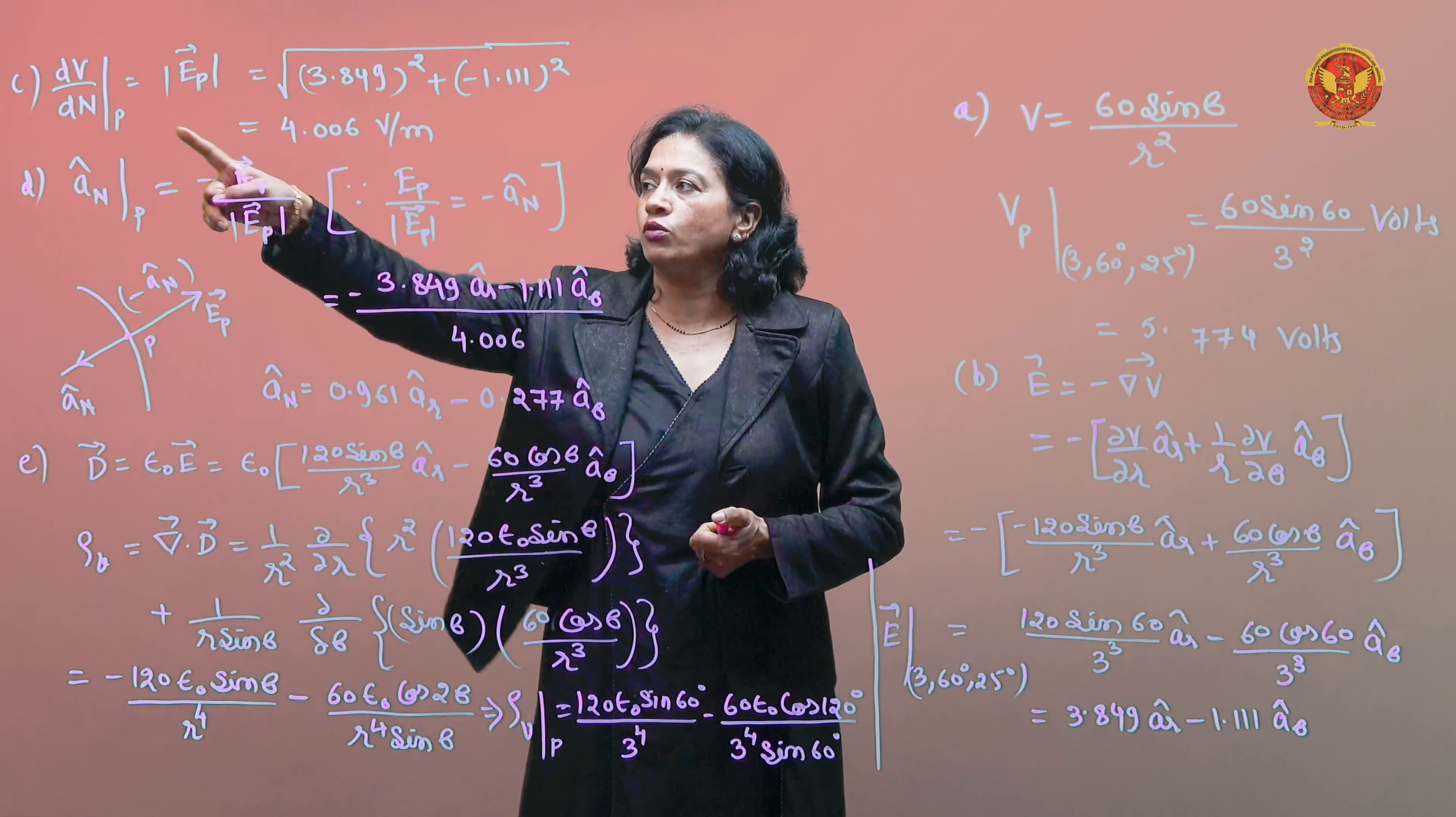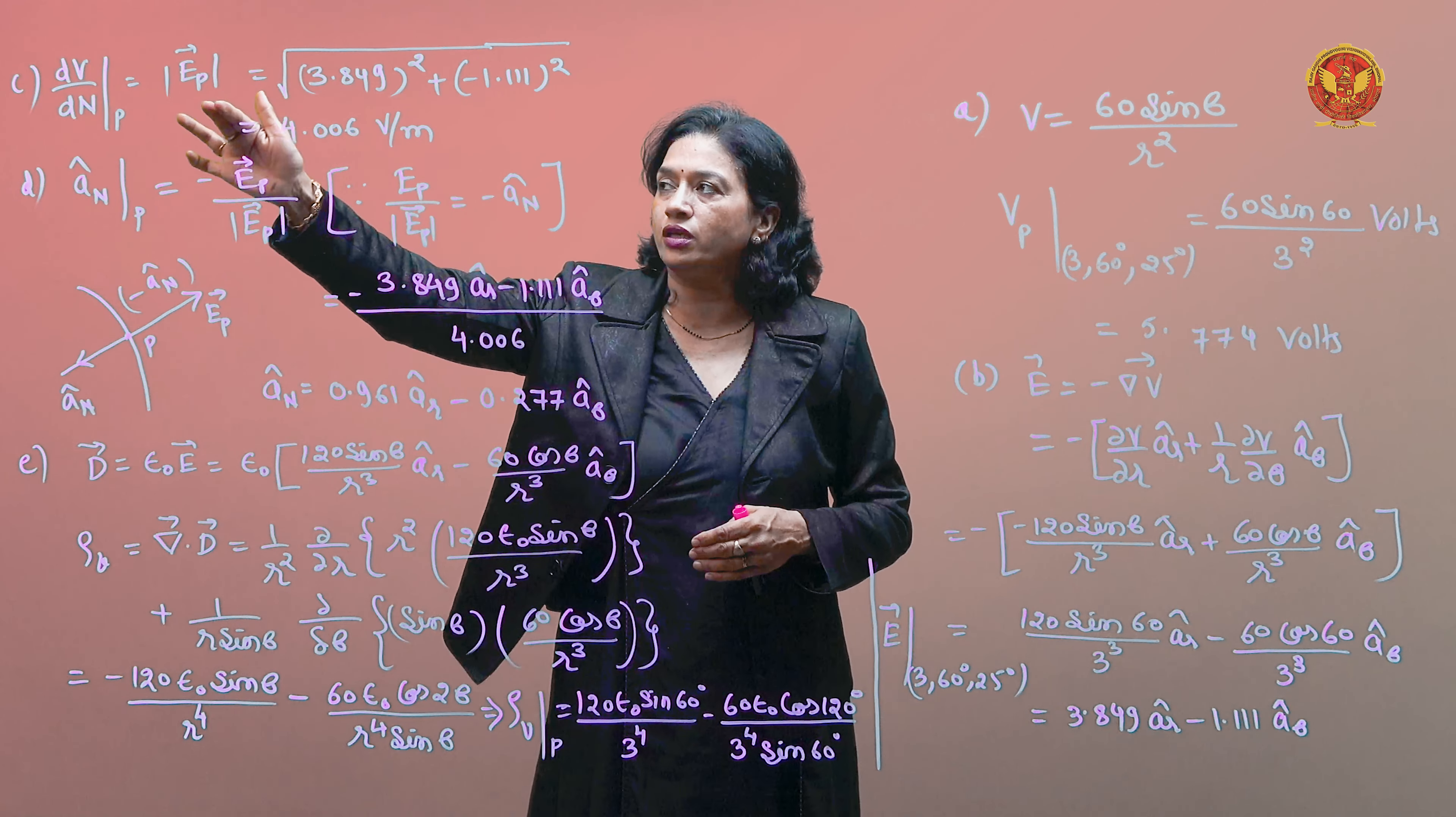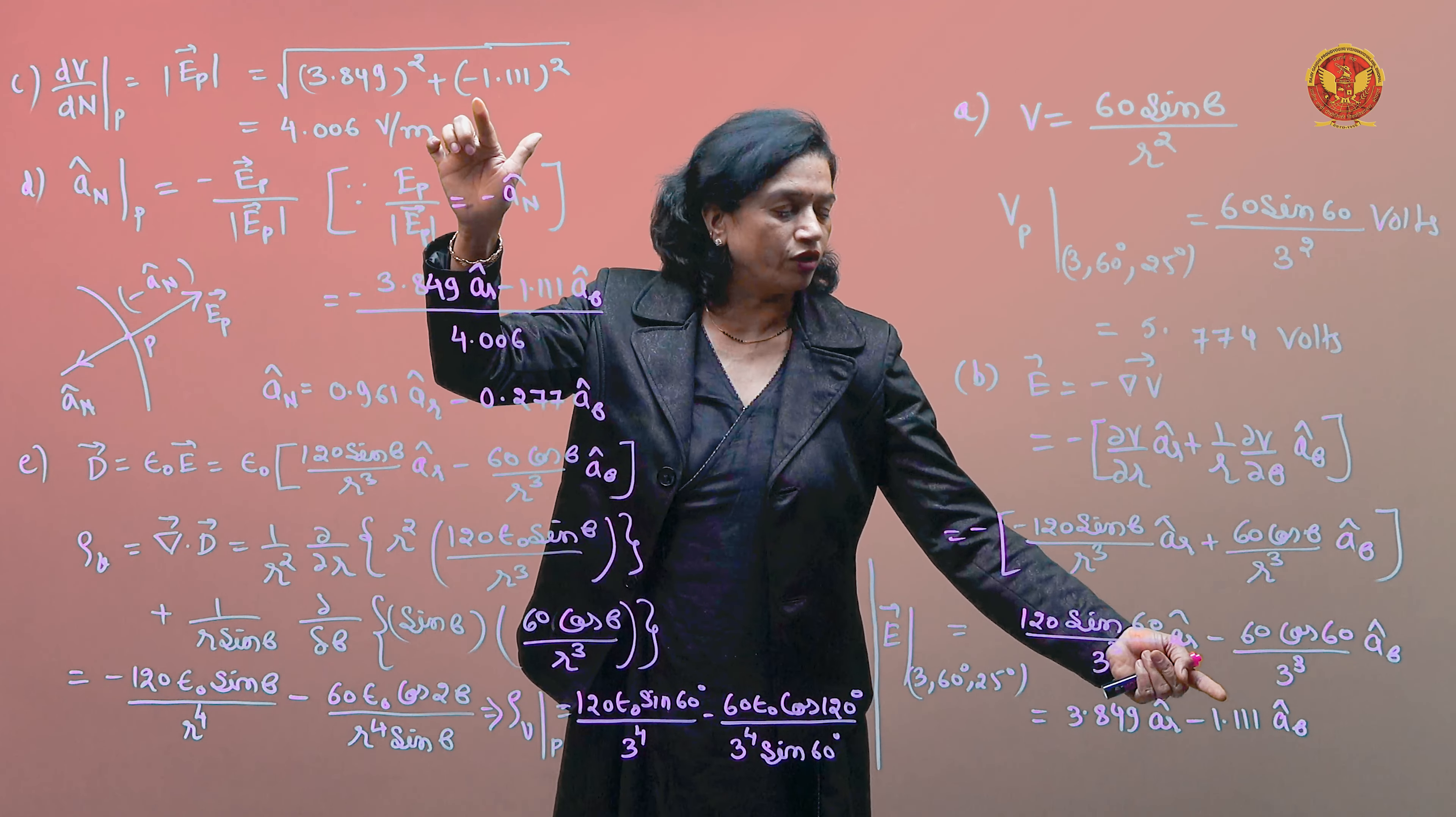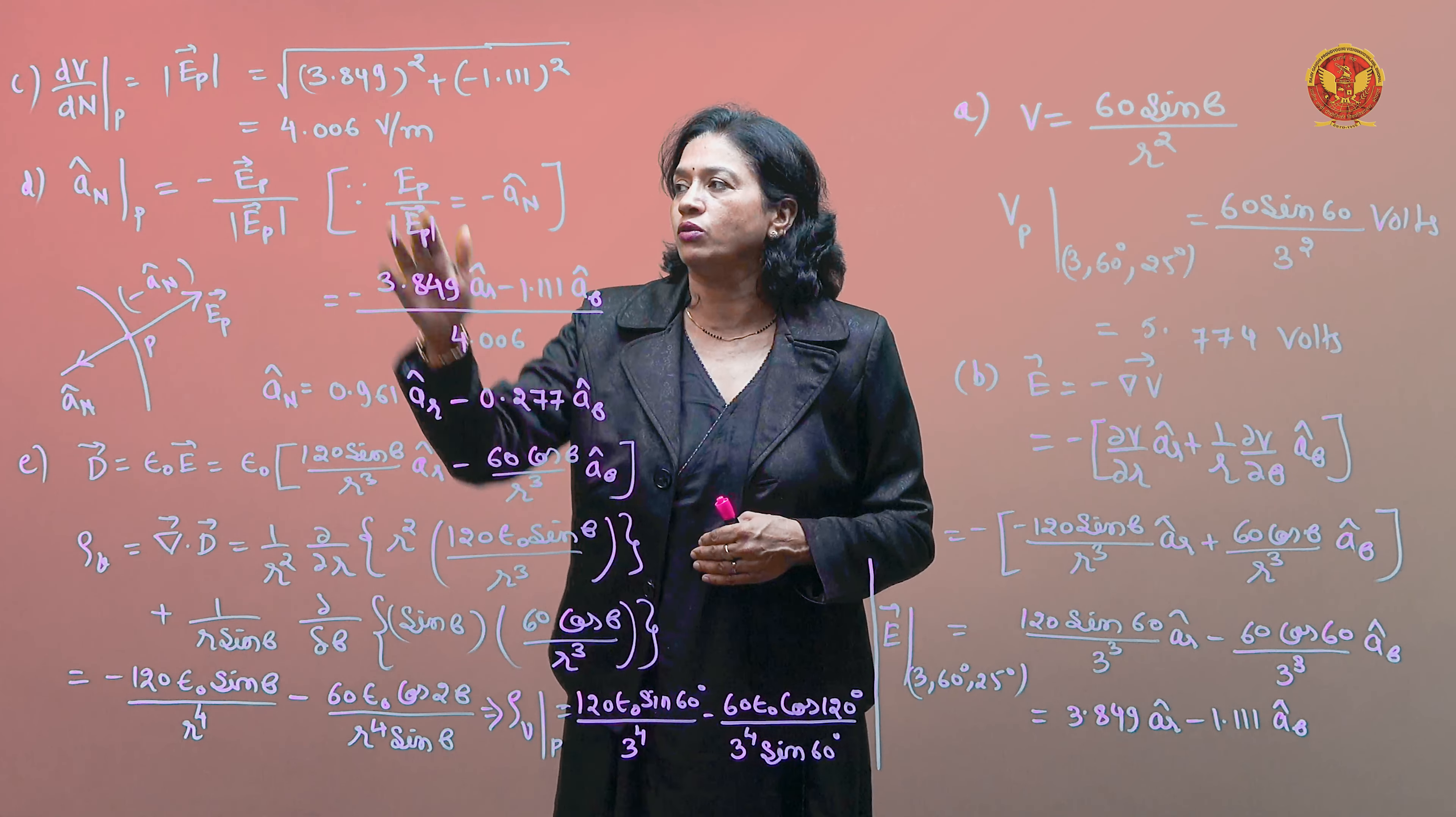Now find dV by dn at P, maximum value of E. Ep magnitude is under root 3.849 square plus 1.111 square. This magnitude at P is dV by dn.